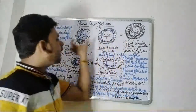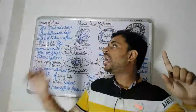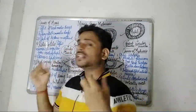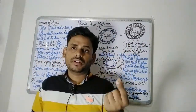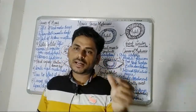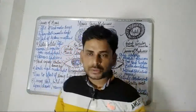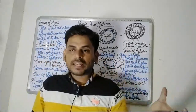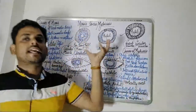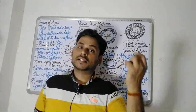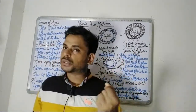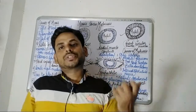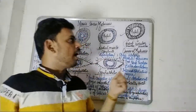To easily remember: miosis is a small word with fewer alphabets and refers to a small pupil, whereas mydriasis is a larger word with more alphabets and indicates a larger pupil. This is a short memory trick to distinguish miosis — smaller pupil — from mydriasis — larger pupil.